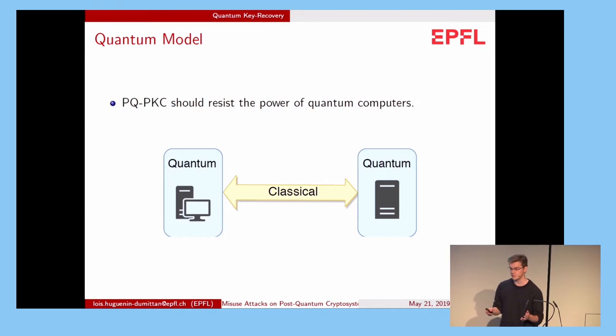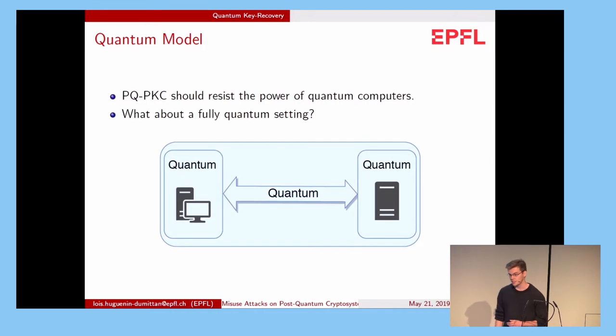Obviously, post-quantum cryptosystems should resist the power of quantum computers. So usually we consider this model here, where the adversary or the parties are quantum, but the communication between the two is classical. But now what about a fully quantum setting? In this setting, everything is quantum, including the communication.